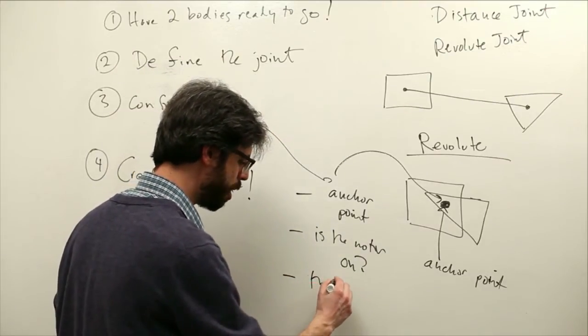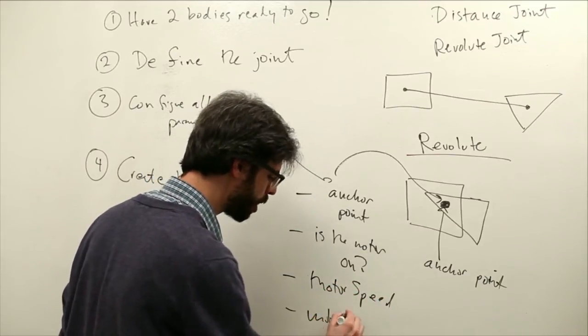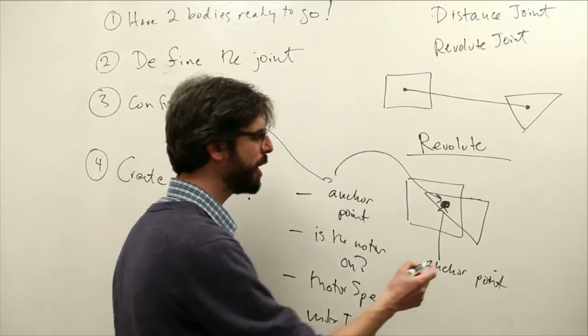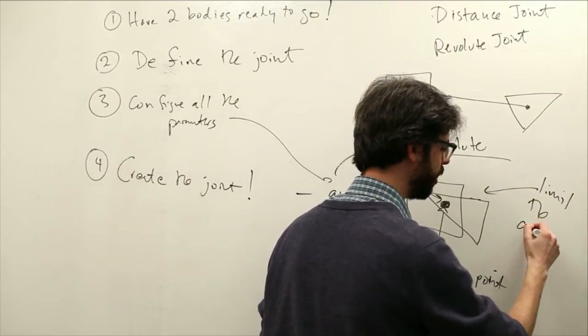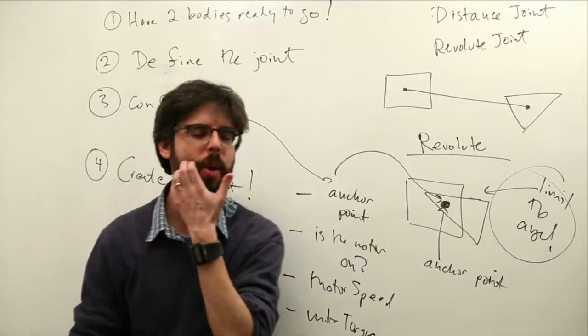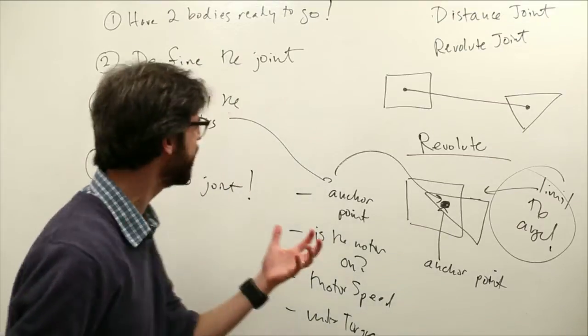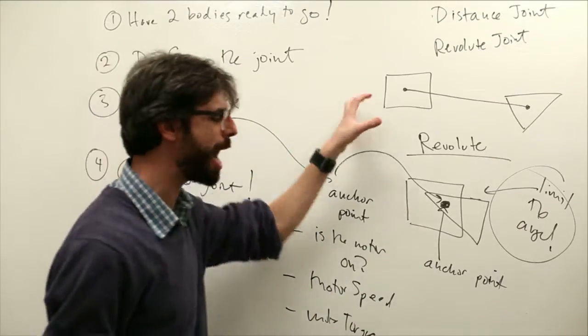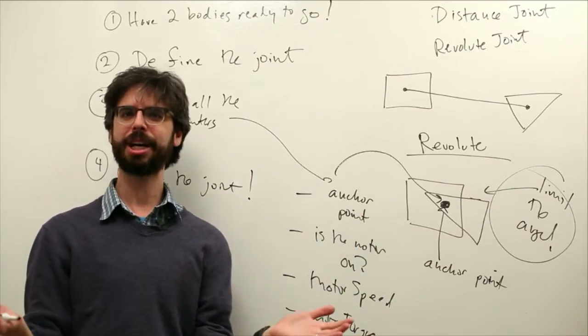There is a motor speed parameter, there is a motor torque parameter, and the other thing we can do is we can limit the angle. There's so many possible ways you can configure and set a revolute joint. The key thing for us to really be comfortable with is the beginning. We have two bodies, we make the joint definition, we set the anchor point, and we let it go.